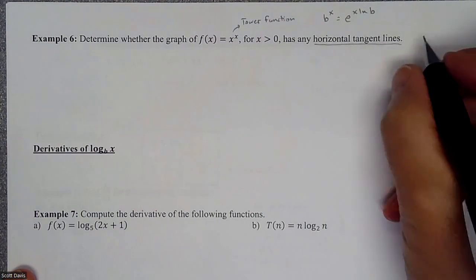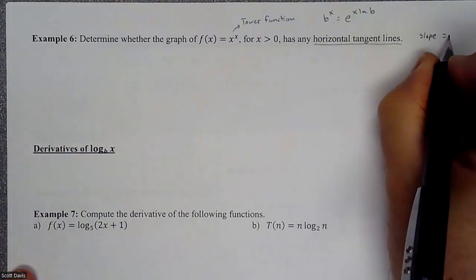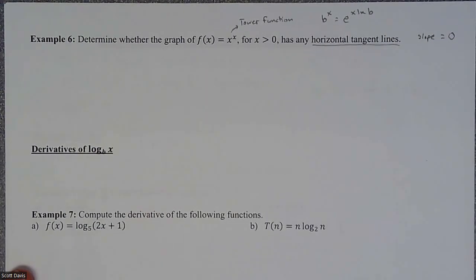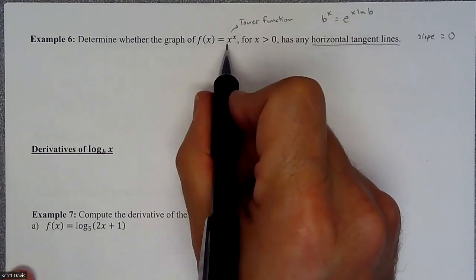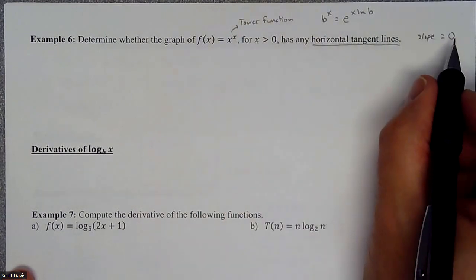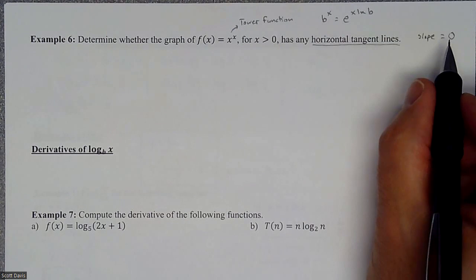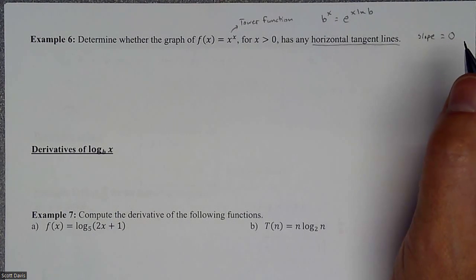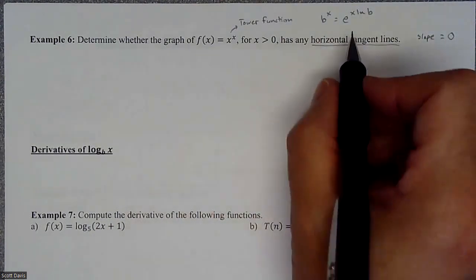Horizontal tangent lines really means we want to know when we have a slope equal to zero. To figure out when a slope is equal to zero, we need a slope equation. So that means we're going to need to do the derivative of this and set that derivative equal to zero. First part is we need to do the derivative, second part is set it equal to zero and see if the equation has any zeros.